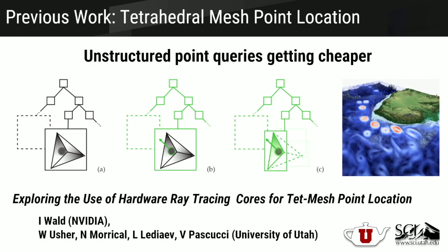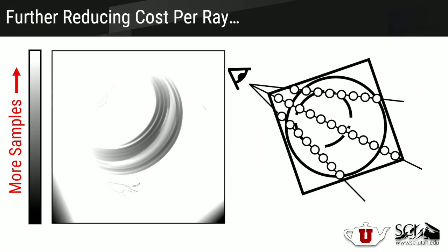For unstructured volumes, we want to make these point queries as efficient as possible to give us as much interactivity as we can get while maintaining acceptable quality. Our prior work published at HPG shows that you can leverage the ray tracing cores found in NVIDIA Turing GPUs to accelerate both the acceleration structure traversal and the point-and-element tests required for point queries on unstructured volumes. But still, more can be done to improve the performance of a direct volume ray caster.